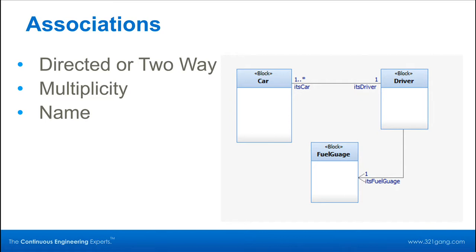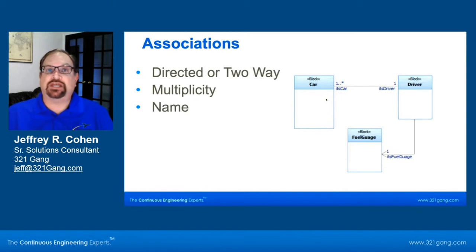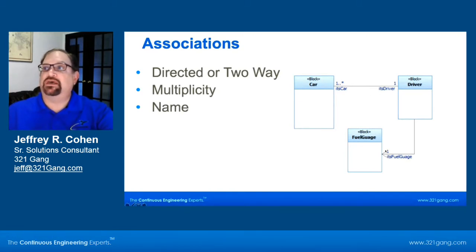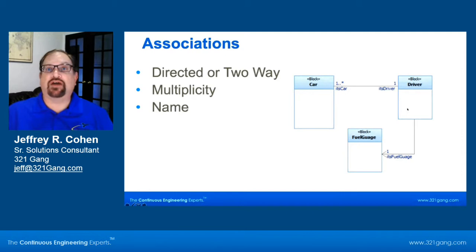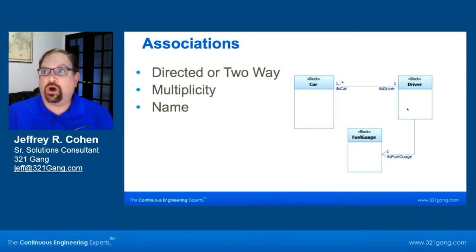When blocks need to communicate with each other, they need a paradigm to be able to communicate, and the way it does it is with associations. Associations can be one way or two way. If it's one way, we refer to it as directed, and we'll see an arrow at the end showing which way it's going. We also have a multiplicity — is there just one or more than one? And we have its name. So how do we read this diagram? We start with the simple directed association between the driver and the fuel gauge. A driver has a fuel gauge — exactly one — and the driver knows it as its fuel gauge. In the bidirectional association, the driver has one or more cars (that one dot dot asterisk) that it knows as its car. The car, on the other hand, has exactly one driver that it knows as its driver.